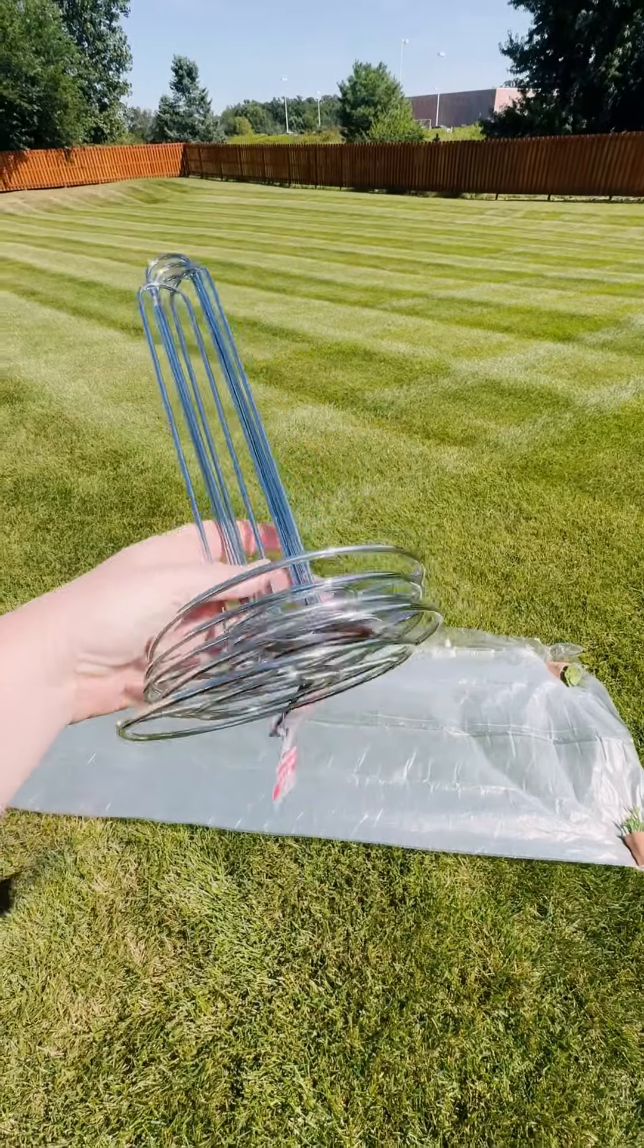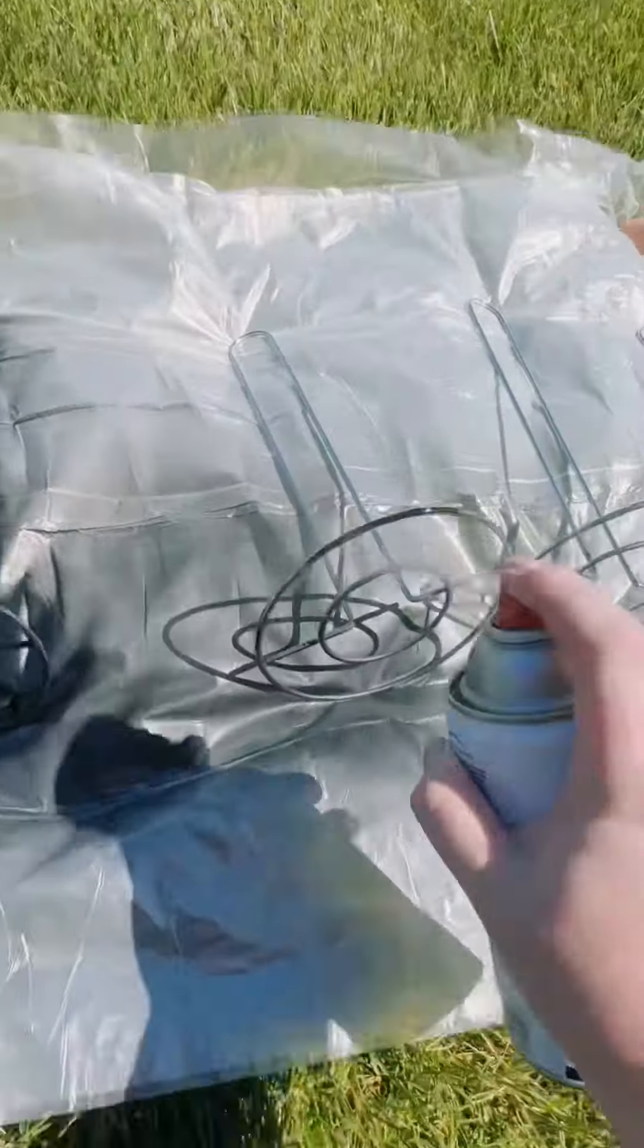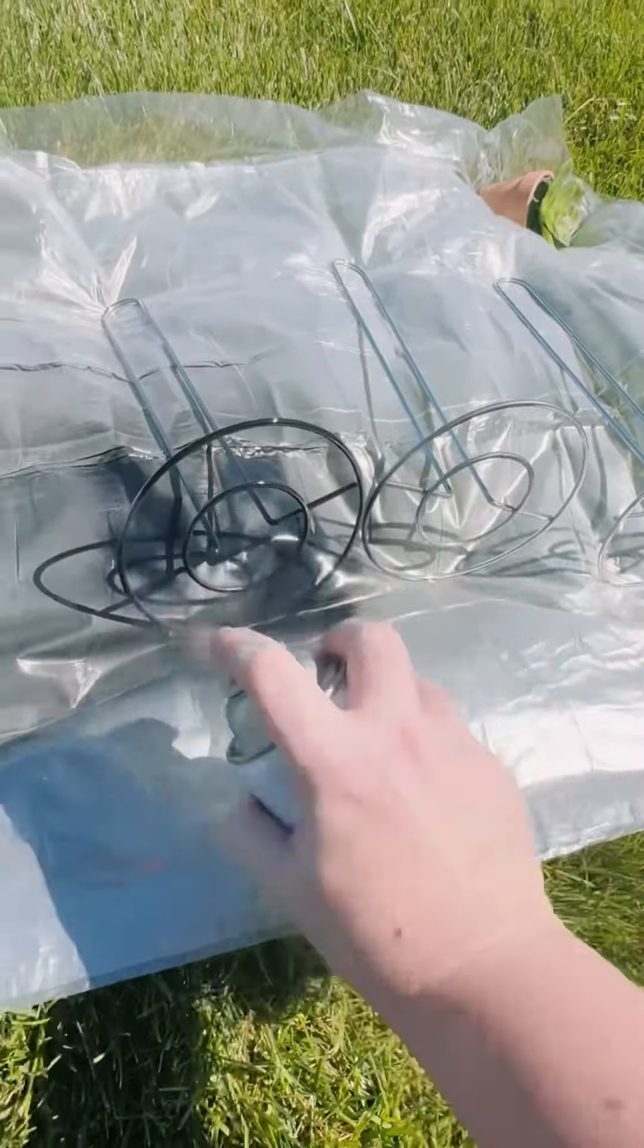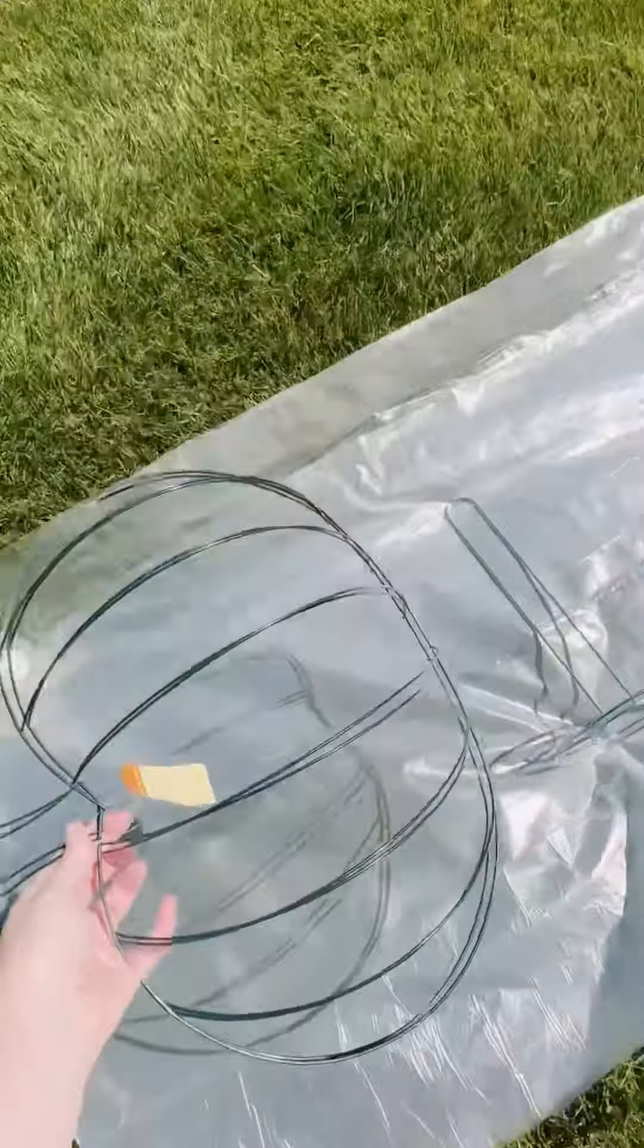I grabbed four metal paper towel holders from Dollar Tree and spray painted them with black spray paint. I allowed those to dry, and then grabbed two metal pumpkin wreaths also from Dollar Tree and spray painted those with black spray paint.